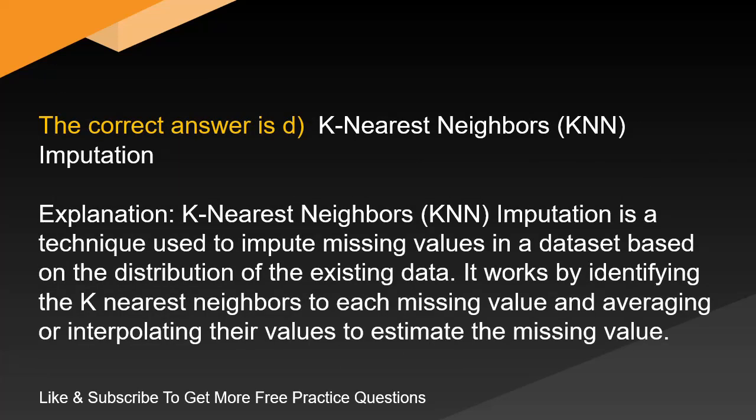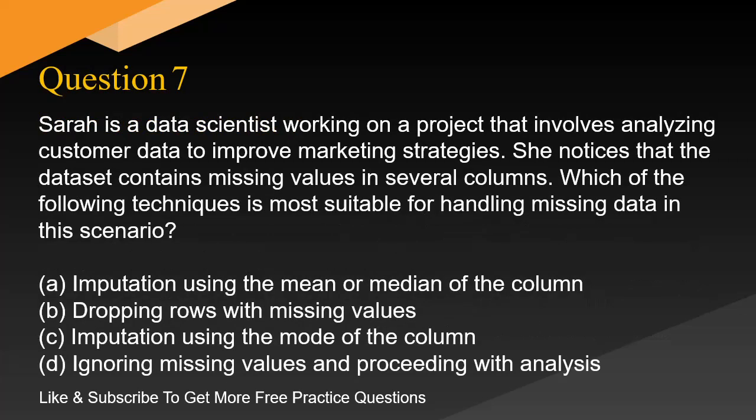The correct answer is D. K-Nearest Neighbors, KNN, imputation. KNN imputation is a technique used to impute missing values in a dataset based on the distribution of the existing data. It works by identifying the K nearest neighbors to each missing value and averaging or interpolating their values to estimate the missing value.